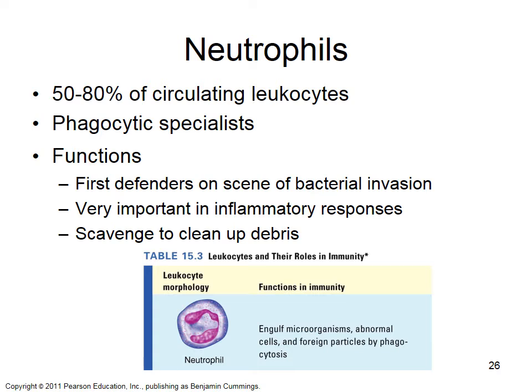Neutrophils make up 50 to 80% of circulating leukocytes and are your phagocytic specialists. Phagocytosis is cell-eating — they engulf things in your bloodstream and also leave the bloodstream to help engulf things in infected tissues. They are the first defenders on the scene of bacterial invasion; when you're fighting a bacterial infection, you'll have huge increases in neutrophil numbers. They also play a major role in the inflammatory response and can leave the bloodstream and go to the site of infection. They are first on the scene and last off, scavenging all the debris left behind.